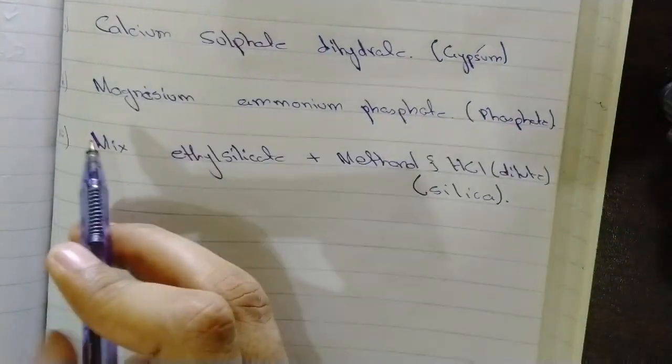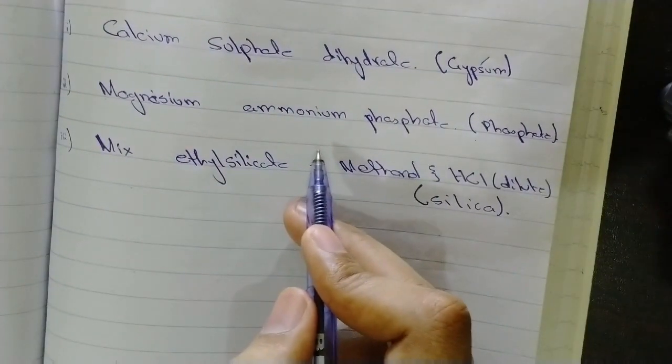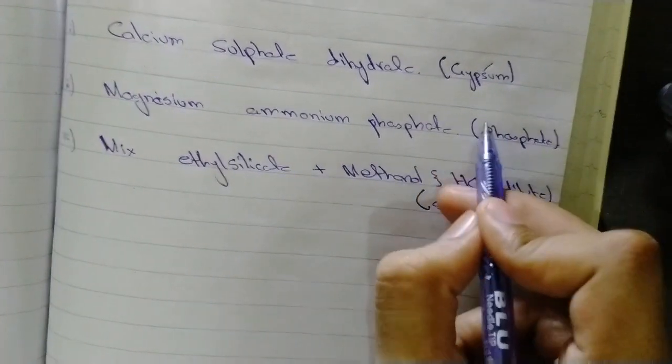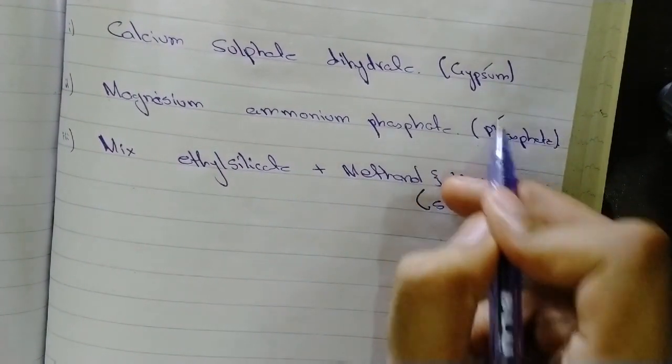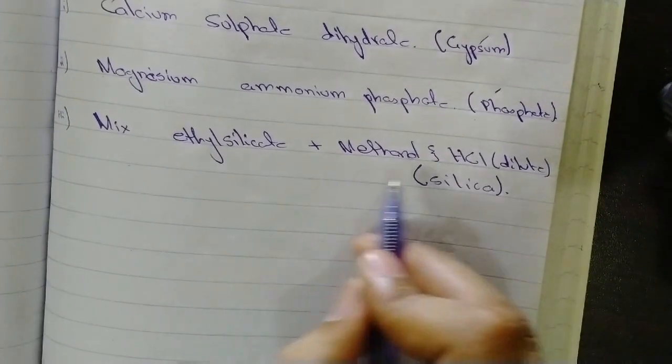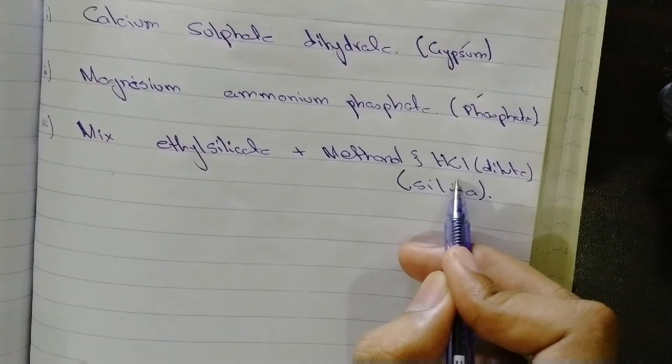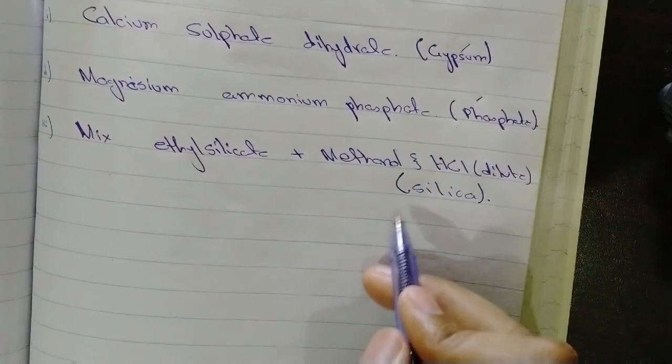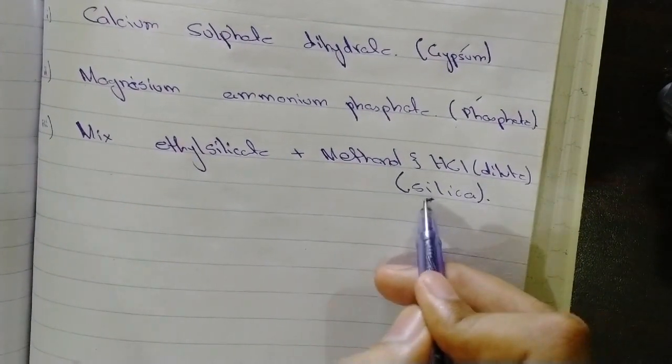Calcium sulphate dihydrate is the binder for gypsum-bonded investment materials. Magnesium ammonium phosphate is the binder for phosphate-bonded materials. Mix ethyl silicate with methanol and diluted HCl is the binder for silica-bonded materials.